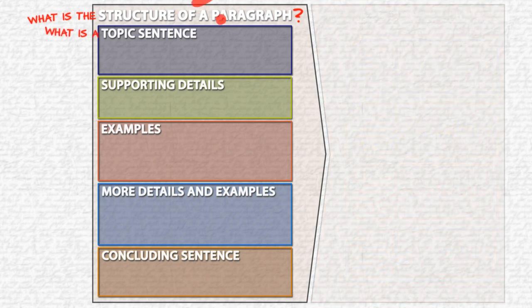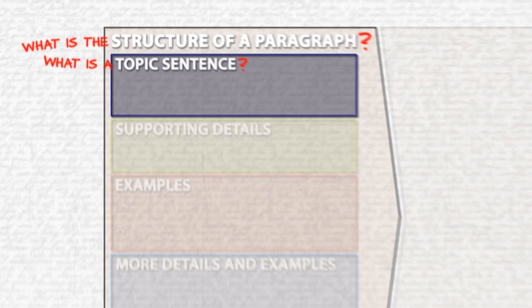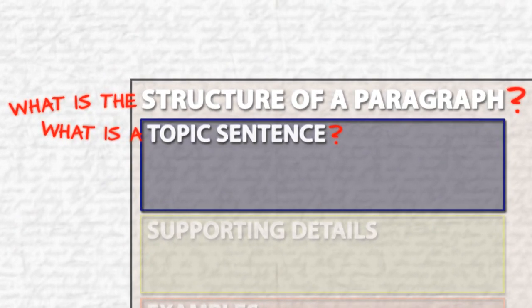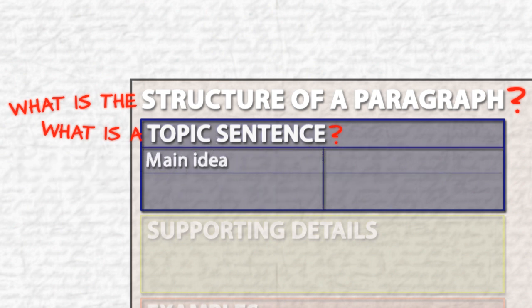What is a topic sentence? A topic sentence is the main idea of your paragraph. To have a good topic sentence, you have to have two things. One, the main idea, and two, the controlling idea.